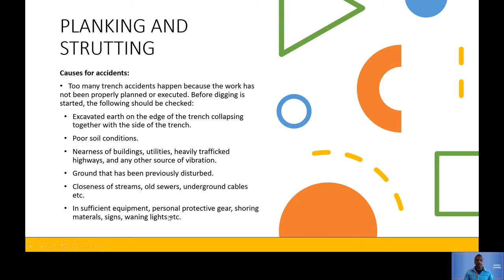Insufficient equipment — including personal protective gear, signage, warning lights — must be taken care of as safety measures on site. This overlaps with preventing collapse; we've been covering causes of collapse and how to prevent them using different words.